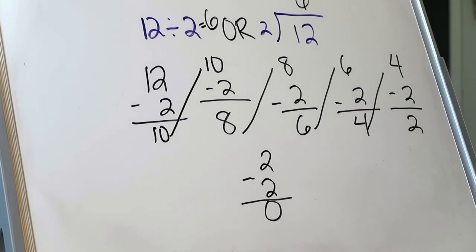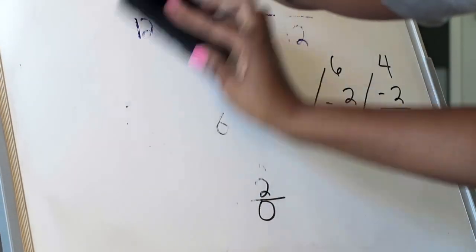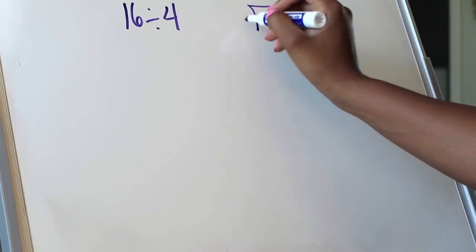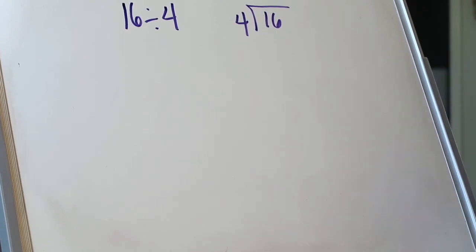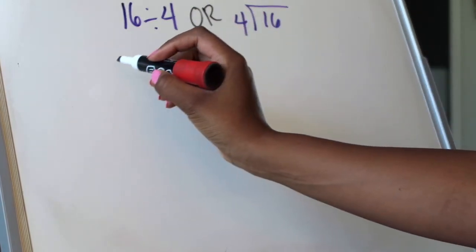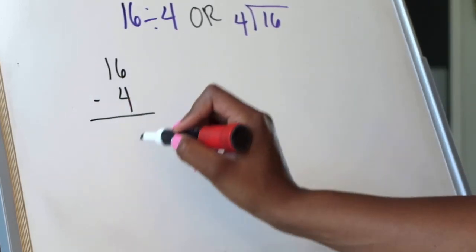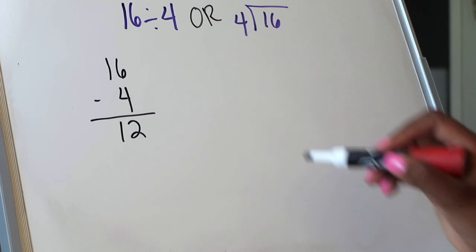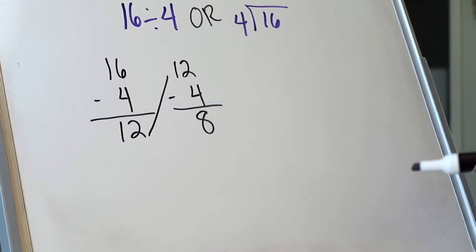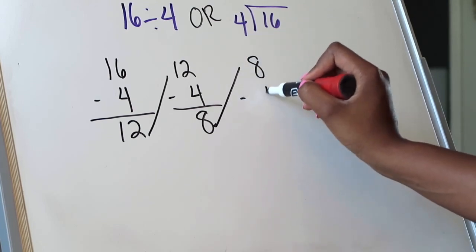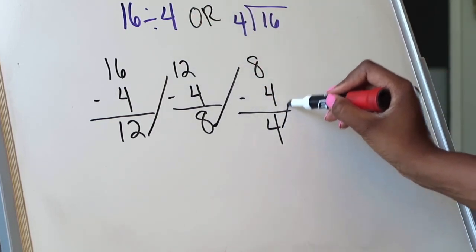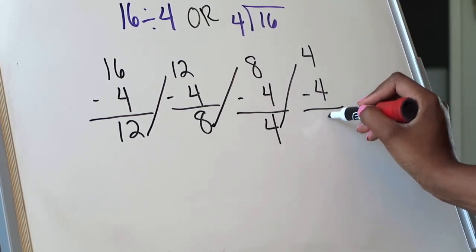Let's do one more example using repeated subtraction: 16 divided by 4, which could also be written as 16 divided by 4 — both are saying the exact same thing. So I'm going to use repeated subtraction, starting with my dividend. 16 minus 4 is going to give me 12. Then 12 minus 4 is going to give me 8. Take the difference and subtract 4 again — 8 minus 4 is going to be 4. Remember I'm subtracting 4 because 4 was my divisor. Take the difference of that: 4 minus 4 is going to be 0.